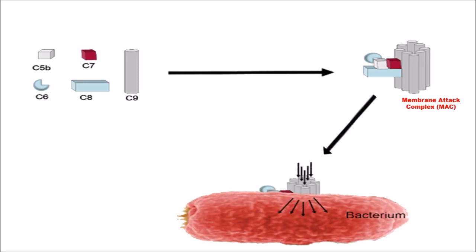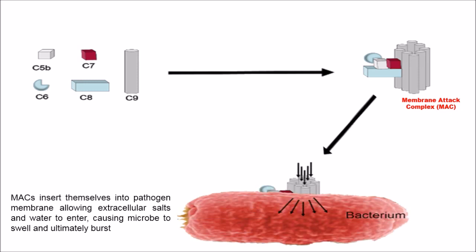This is how the membrane attack complex works. C5b, C6, C7, C8 and C9 components get self-associated to form a membrane attack complex. This membrane attack complex inserts themselves into the bacterial membrane allowing extracellular salts and water to enter inside the pathogen cell. This causes the swelling of microbial cell and ultimately the bursting of the pathogen cell.